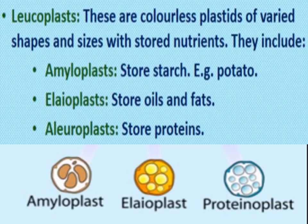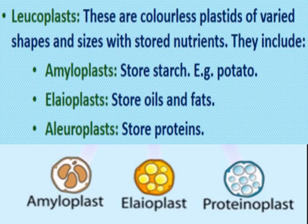The next type is leukoplast. Leukoplasts are colorless plastids — the word 'leuko' represents white. They are of varied shapes and sizes and store nutrients. Leukoplasts are of different types based on what food is stored inside them. If they store starch, they are called amyloplasts — for example, in potato.